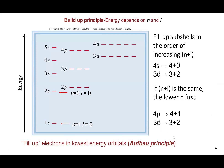Orbitals that belong to the same energy level do not have the same energy — they have different energies based on their penetration. So 2s has lower energy than 2p; 3s has lower energy than 3p, which is lower than 3d. This effect becomes more pronounced at higher energy levels, to the extent that even 4s has lower energy than 3d. The order of orbital energies is not straightforward — it depends on both the n and L quantum numbers.